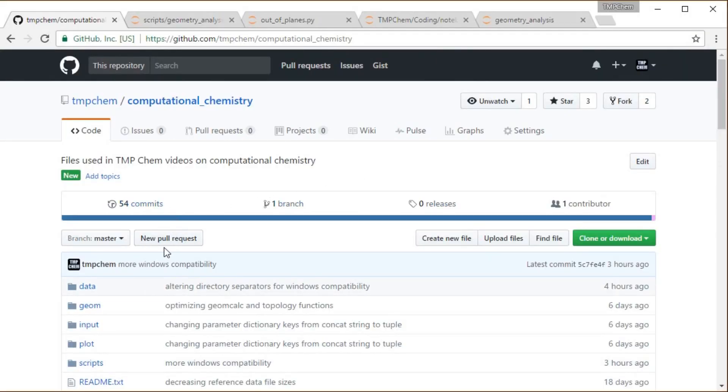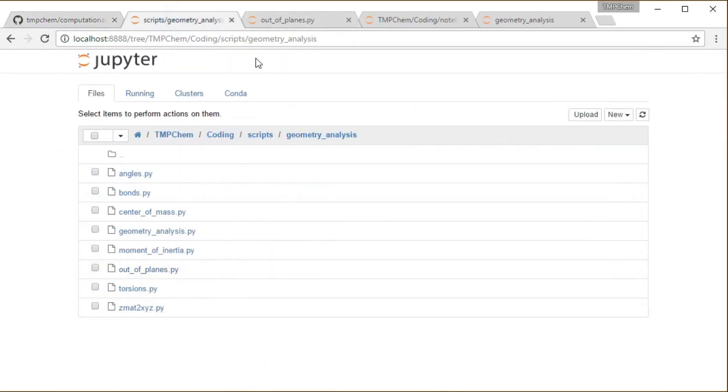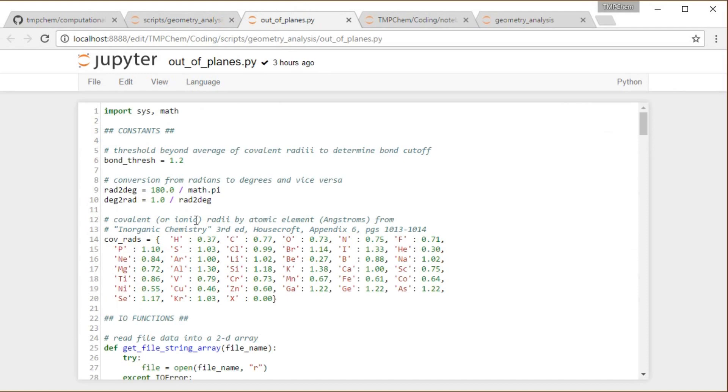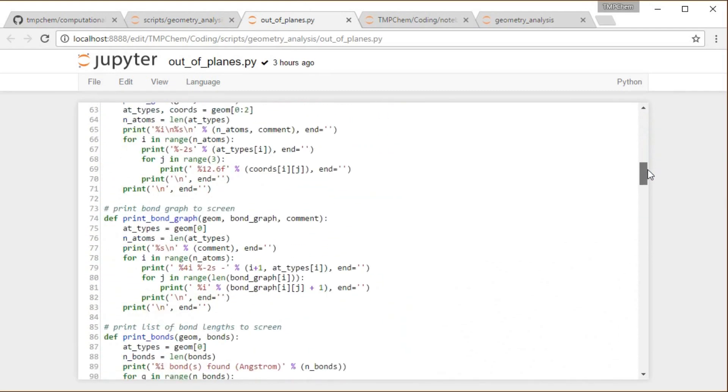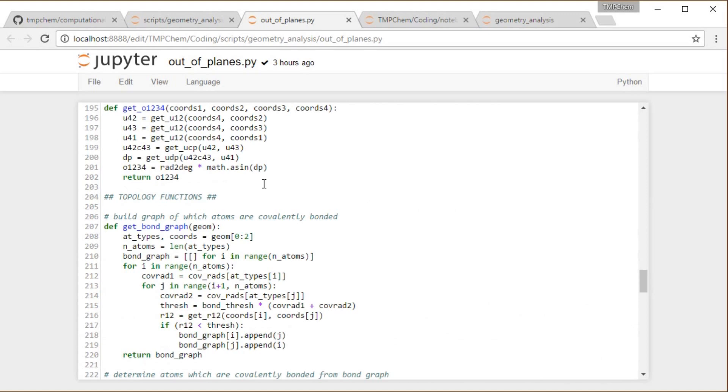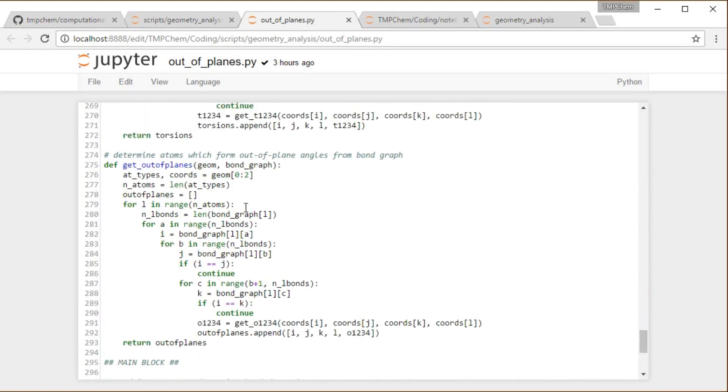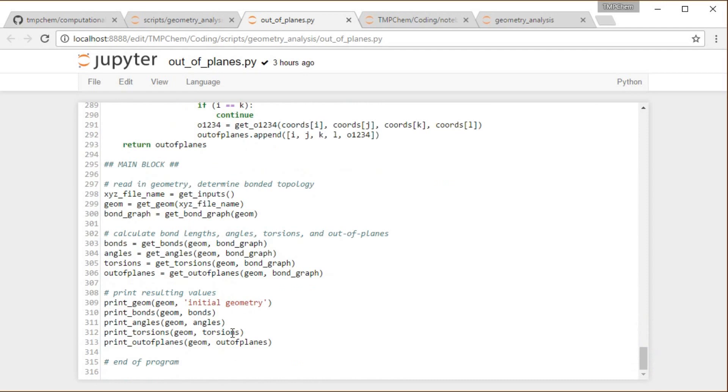Moving along to our programs as we've been using in this chapter, coming from my GitHub account, the Computational Chemistry Repository. In the scripts, geometry analysis subdirectories, there is a program called outofplanes.py, which I use to compute all the stuff we've done thus far in this chapter, including bonds, angles, and torsions, now including some extra functions for out-of-planes, print out-of-planes. There's the out-of-plane angle function, going through the bond graph and figuring out where the out-of-plane angles are, then main block printing out all that stuff.